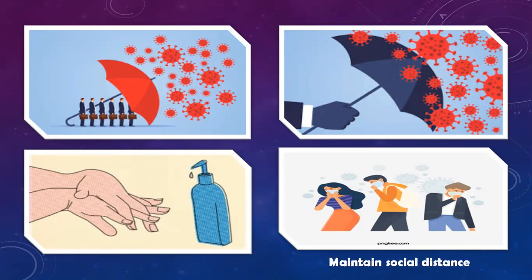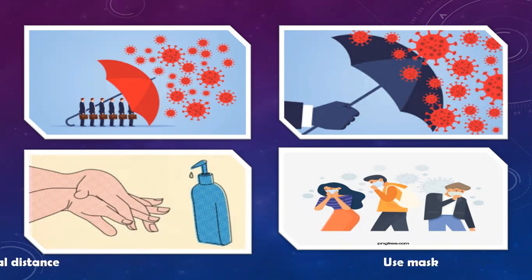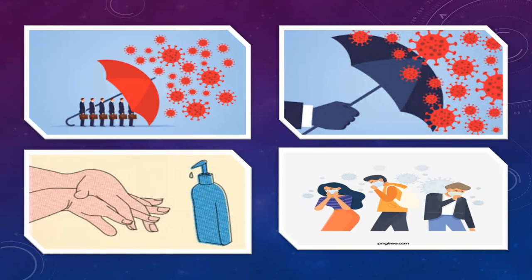To protect yourself from COVID, you can follow the following eating habits. Eat foods rich in vitamin C regularly — for example, lemon, orange, mango, guava, pineapple, etc. Eat eggs regularly. Eat milk or dairy foods. Eat plenty of fruits and vegetables. Limit foods and drinks high in fat, sugar, and salt. Choose both plant and animal-based protein. Stay hydrated.